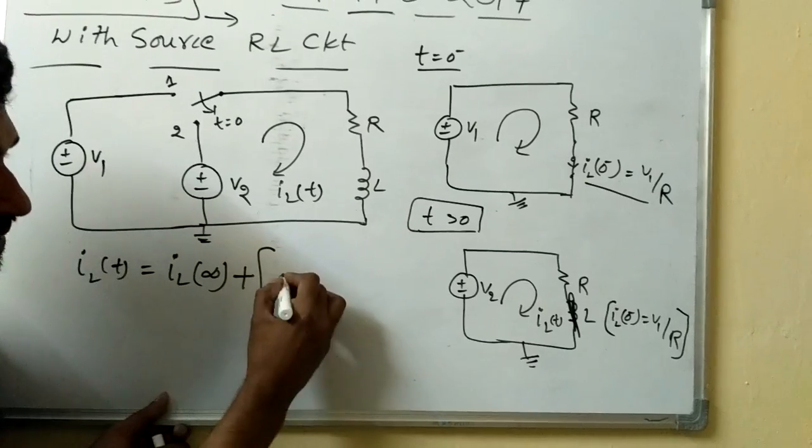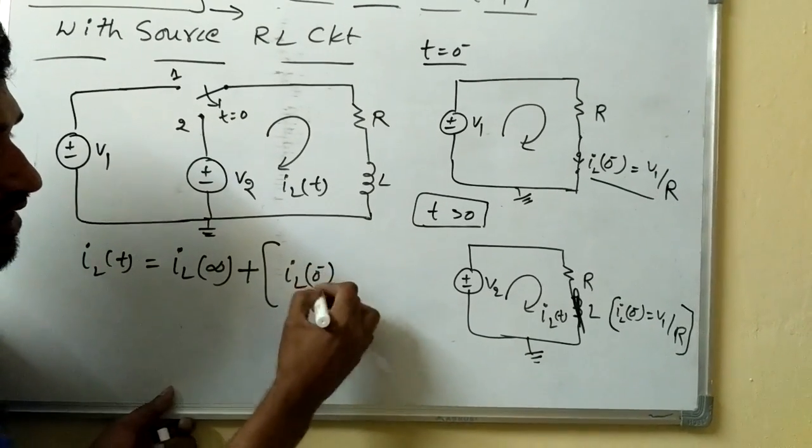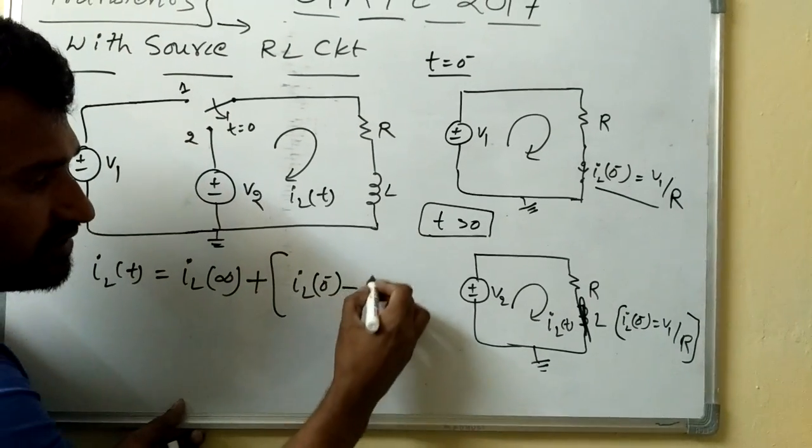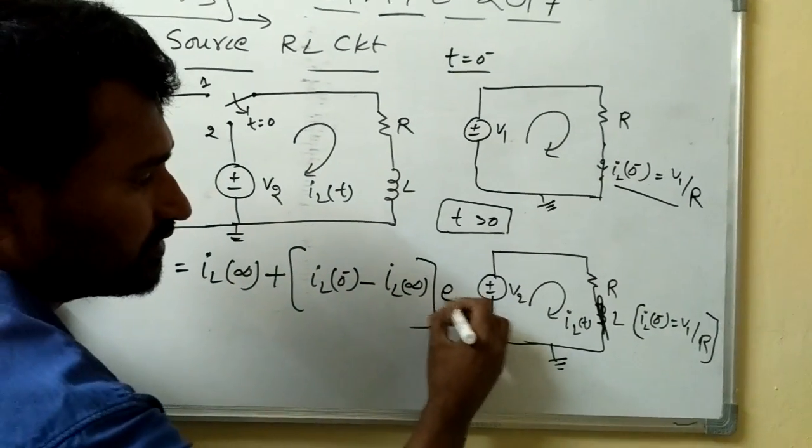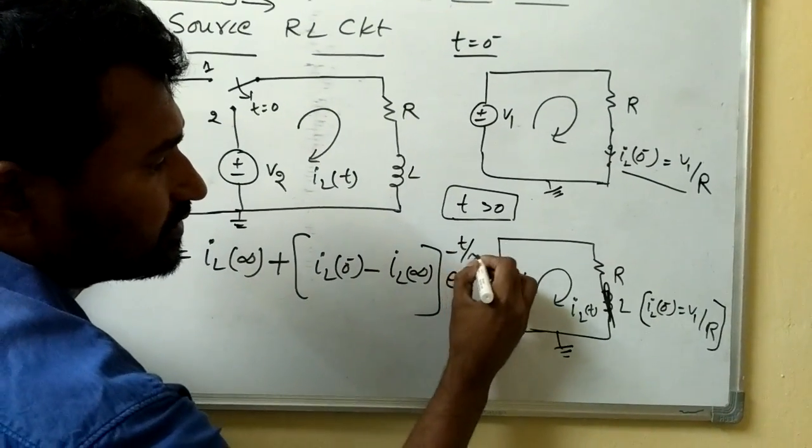Plus iL of 0 minus, already we got that value, minus iL of infinity into e power minus t by tau.